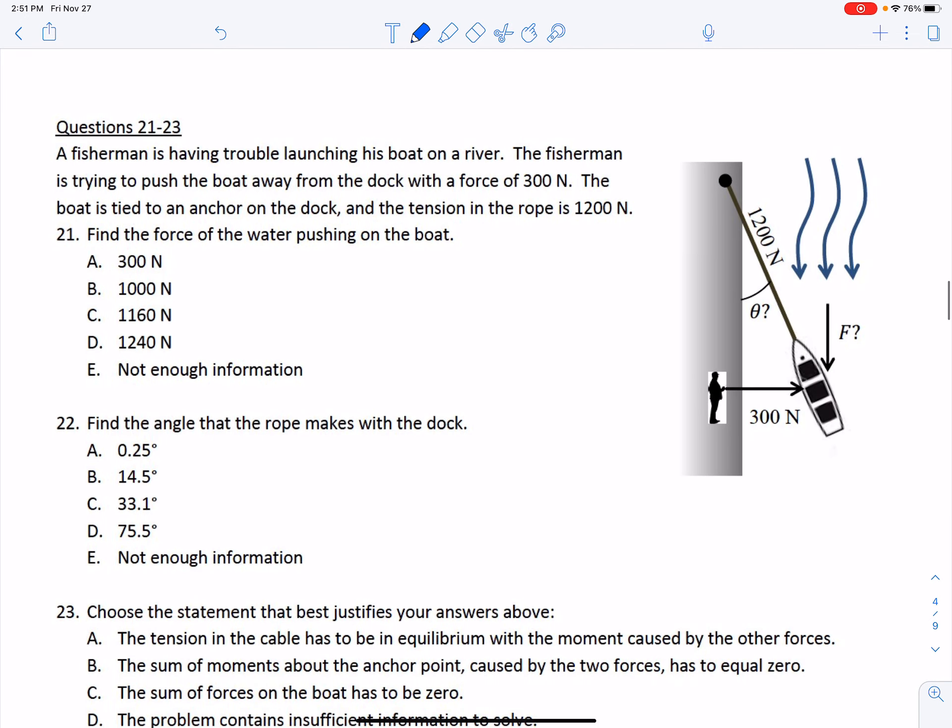Next we get to the problems about the boat. I'm looking at this water coming down, there's 1200 newtons of tension on the cable indicated here. We're exerting 300 newtons of force pushing the boat out, and we're wondering what is F.